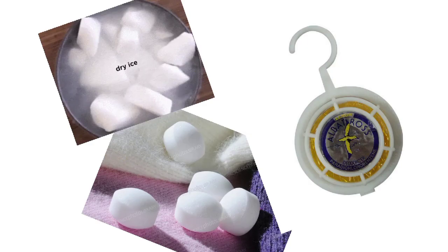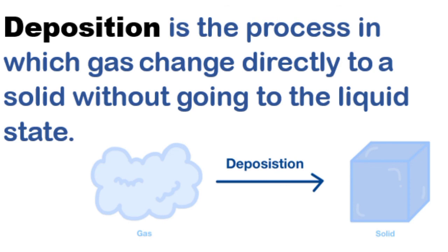Sublimation only occurs when the particles of a solid absorb enough energy to completely overcome the forces of attraction between them. The most common examples of solids that undergo sublimation are dry ice, moth balls or naphthalene balls, and bathroom air fresheners. Sometimes gases can turn straight into a solid when cold — this is called deposition.